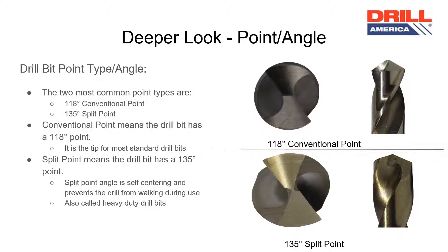The drill bit point type determines how the drill bit will function when it is in use. Most drill bits come with a 118 degree point, which is called a conventional point. Some of our more heavy duty drill bits come with a 135 degree point, which is called a split point. This point prevents the drill from moving, also called walking, during use.